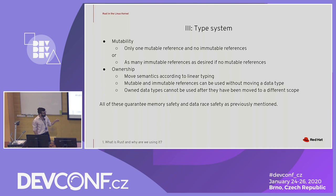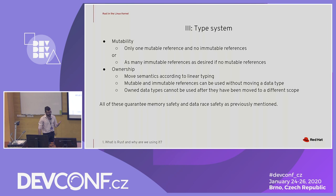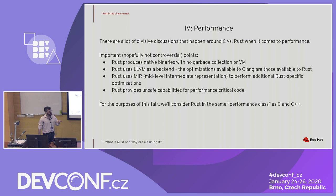Rust uses move semantics for ownership. Mutable and immutable references can be passed into functions but that does not constitute a move. Own data types will be moved when passed into a function and cannot be used in the original scope after they have been moved. This guarantees memory safety and data race safety, as we talked about before.